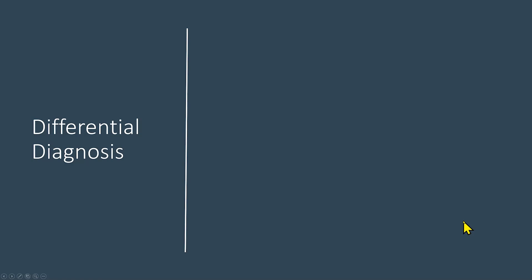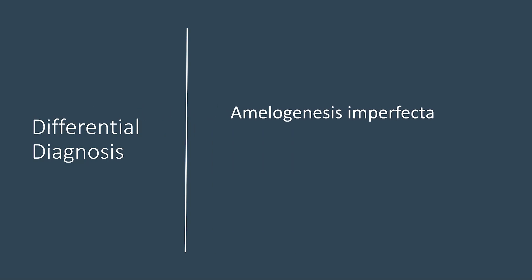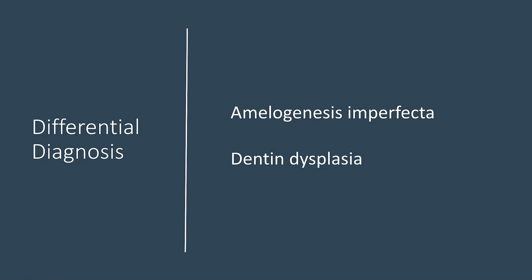The differential diagnosis of dentinogenesis imperfecta includes about two conditions: amelogenesis imperfecta and dentin dysplasia. Amelogenesis imperfecta is easy to identify — it does not have much similarity in radiographic features, only the name is similar. So it should be easy to identify a patient with amelogenesis imperfecta. If you need, please go back to the other video that discusses amelogenesis imperfecta.